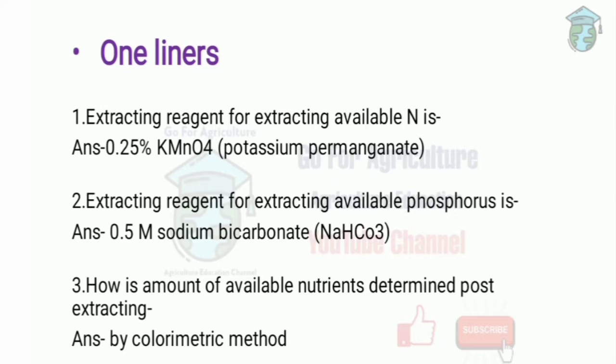The first question is: the extracting reagent for extracting available nitrogen is 0.25% potassium permanganate. The extracting reagent for extracting available phosphorus is 0.5M sodium bicarbonate.